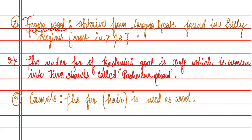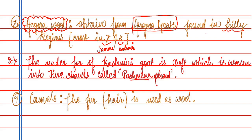Next is Angora wool. Angora is a goat found in hilly regions, mainly Jammu and Kashmir. The under fur of the Kashmiri goat is very soft and is woven into fine shawls called Pashmina shawls.